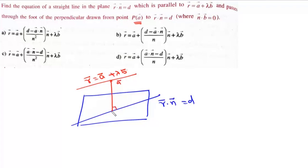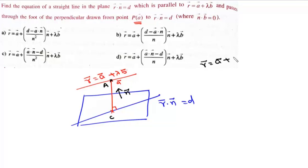The foot of perpendicular lies on this line. Since a point a is given and the direction is given by the normal n to the plane, we can write the equation of this line as r = a + λn.